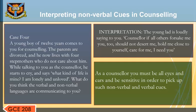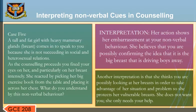As a counselor, you must be all eyes and ears and sensitive in order to pick up such non-verbal and verbal cues. Case 5: A tall and heavy-set girl comes in to speak to you because she is not succeeding in social and heterosexual relations. As a counseling procedure, you fix your eyes on her and particularly on her breasts intensely. She reacts by picking her big exercise book from the table and placing it across her chest. Interpretation: Her action shows her embarrassment at your non-verbal behavior. She believes you are possibly confirming the idea that her large breasts are driving boys away, or that you are looking at her breasts in order to take advantage of her situation. So she protects herself — she does not want you in that way; she only needs your help.